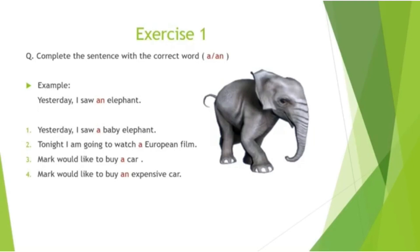That is one of those difficult situations — the word begins with a vowel letter but in fact when pronounced it is a consonant sound: 'European'. Exercise three: 'Mark would like to buy a car' — a consonant sound. 'Mark would like to buy an expensive car' — this time an adjective comes before 'car', and the adjective 'expensive' has a vowel sound, so we use 'an'.